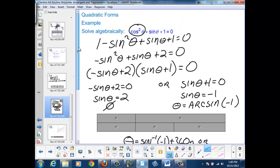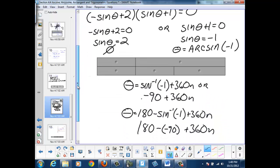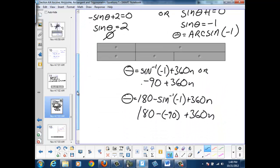We go back to our original expression and we notice that there are no domain restrictions. So these formulas should be sufficient. We can take this one step further, 180 minus negative 90 is 270 plus 360n.